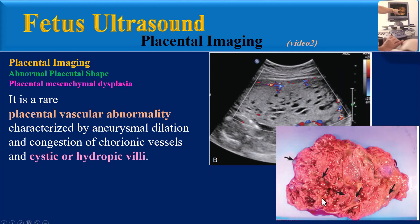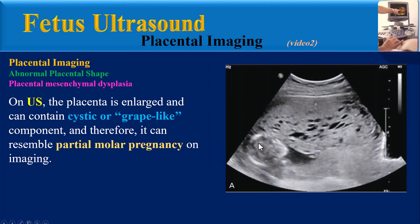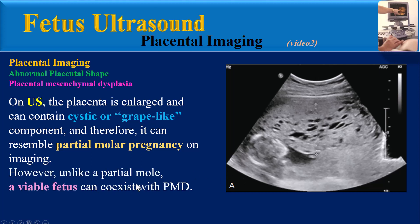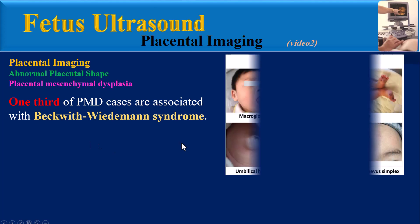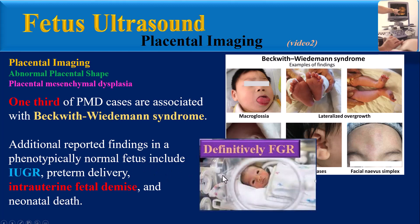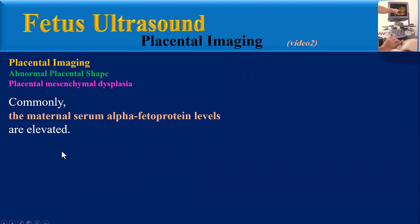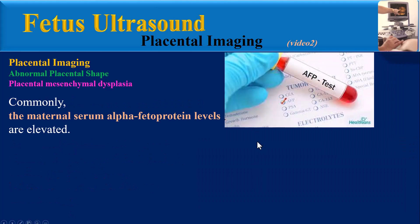Placental mesenchymal dysplasia is a rare placental vascular abnormality characterized by aneurysmal dilation and congestion of chorionic vessels and cystic or hydropic villi. On ultrasound, the placenta is enlarged and can contain cystic or grape-like components, and therefore it can resemble partial molar pregnancy on imaging. However, unlike a partial mole, a viable fetus can coexist with dysplasia. One-third of cases are associated with Beckwith-Wiedemann syndrome.